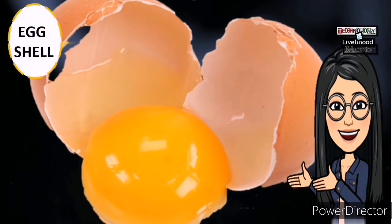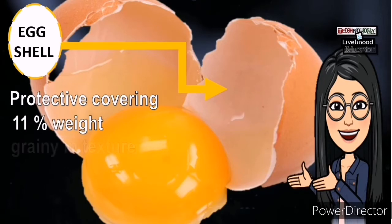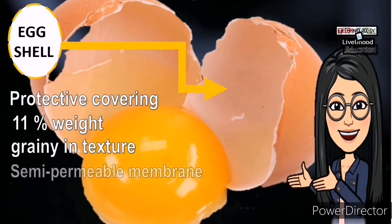Egg shell — It serves as a protective covering of the egg and helps maintain its freshness. It constitutes 11% of the weight of the egg. Grainy in texture, it is semi-permeable, which means air and moisture can pass through its pores. It has a bloom or cuticle that keeps the egg free from dirt and dust.